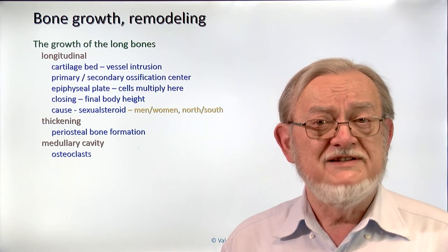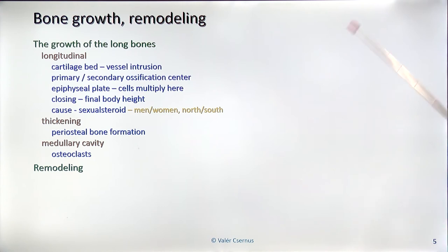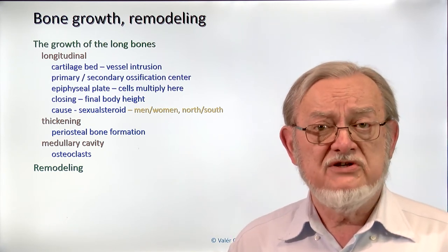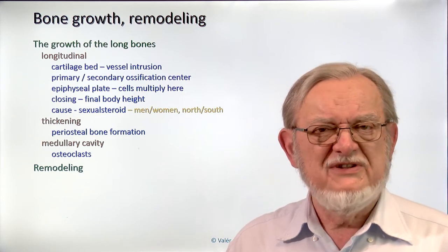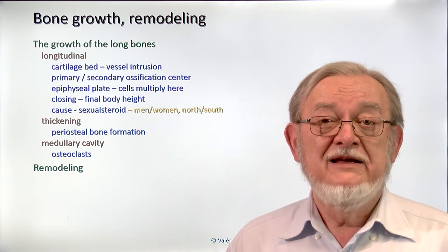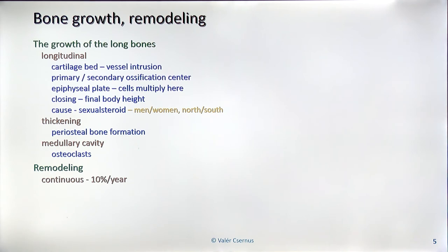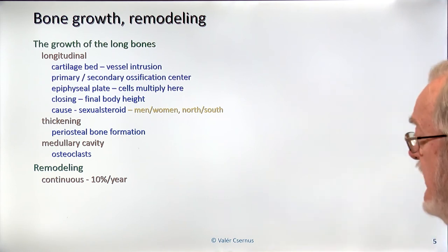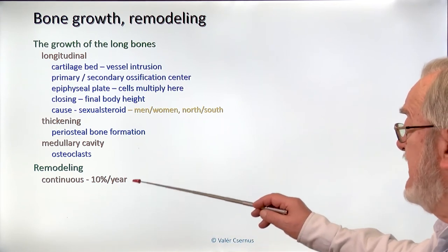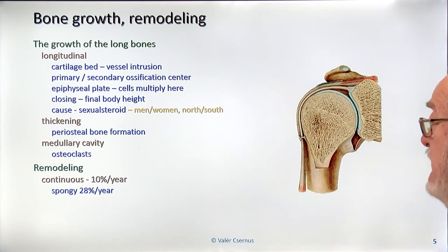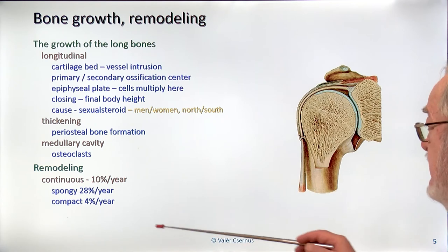Next, let's look at remodeling. Both intramembranous and cartilaginous ossification result in an irregular bone with bony beams in a very irregular arrangement. But our final bones are very regular, with nicely parallel-running osteons. This is due to remodeling. Even after the initial structure is set up, remodeling continues throughout life — even 100-year-old people have changing bone structure. About 10 percent of the bone changes each year; more than a quarter of the spongy part is exchanged in a year, while compact bone remodels much slower, about 4 percent yearly.